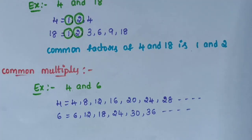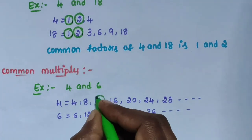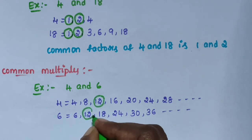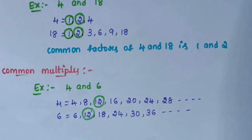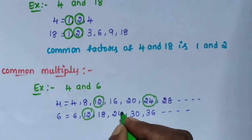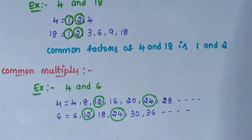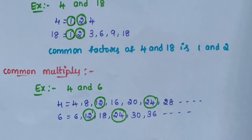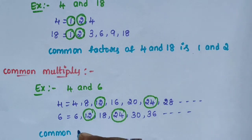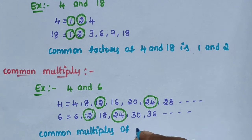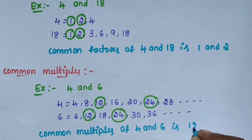We observe that 12 and 24 are the common multiples of 4 and 6. The common multiples of 4 and 6 are 12 and 24.